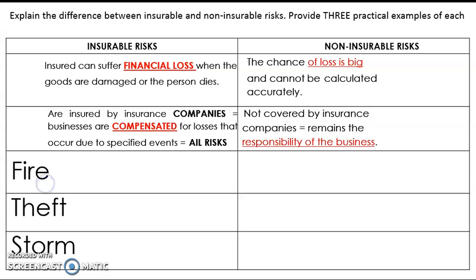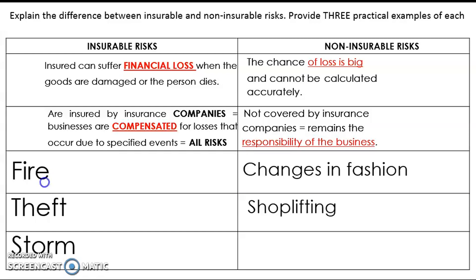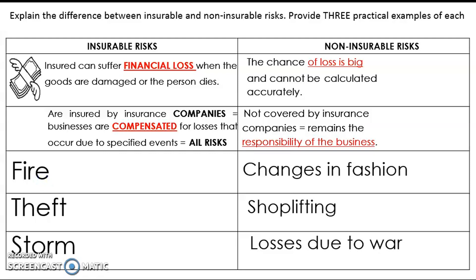Now let's give some practical examples. Fire, theft, and storm are insurable risks — in the event of a fire, theft, or storm, that is an insurable risk and companies can insure you. Things that are non-insurable risks include changes in fashion trends, shoplifting, and losses due to war.